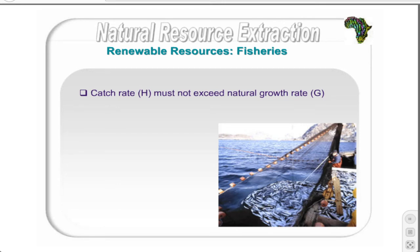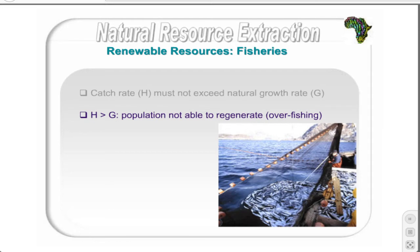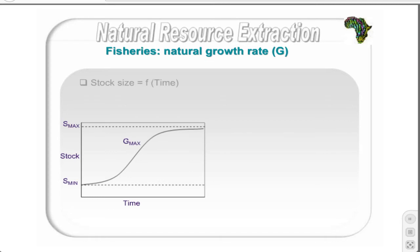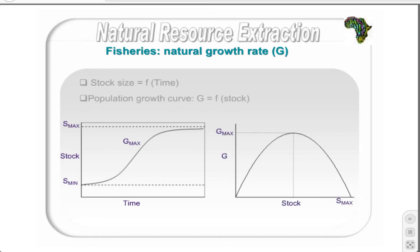Sustainable harvesting of marine resources requires that the catch rate or harvest rate H does not exceed the natural growth rate of the resource stock, G, which is the rate at which the population can regenerate itself. Harvest rates exceeding the growth rate are unsustainable, since the population cannot regenerate itself and the stock size will decline. If overfishing continues, the population will eventually be driven to extinction. The natural growth rate of a marine population is the growth rate ignoring mortality due to harvesting, illustrated by a stock size curve and a corresponding population growth curve, assuming logistic density-dependent growth.